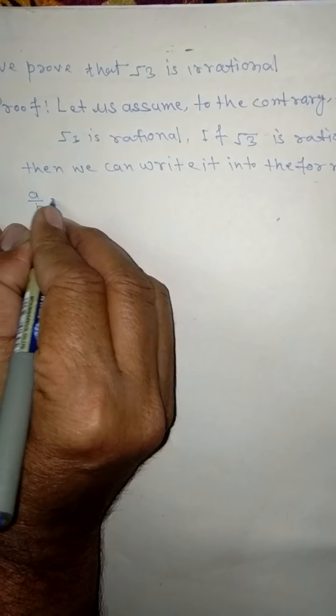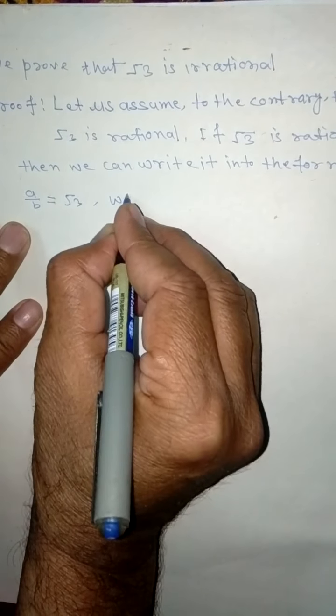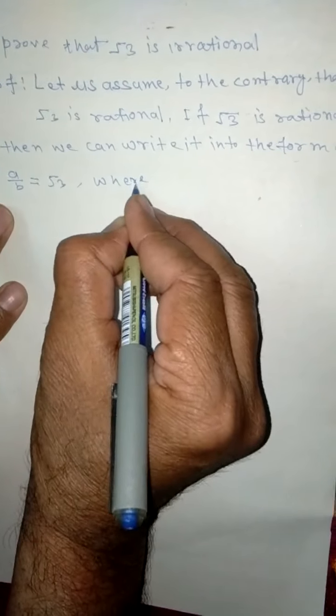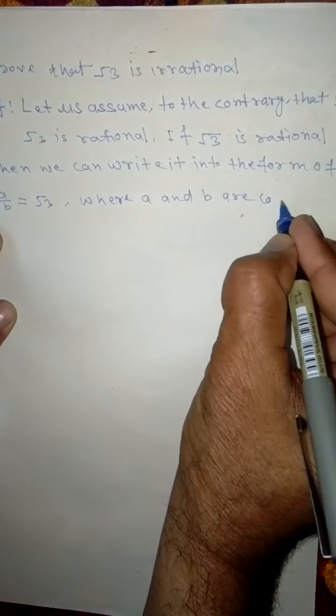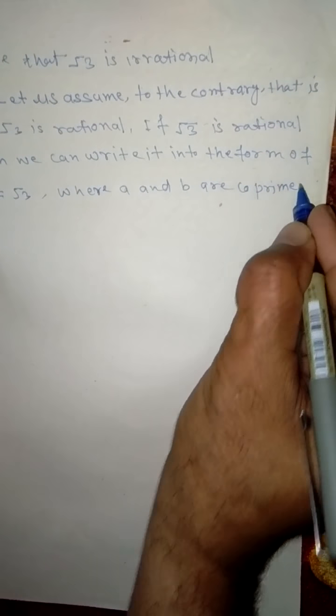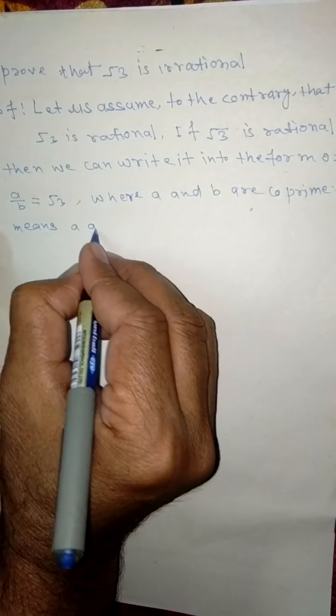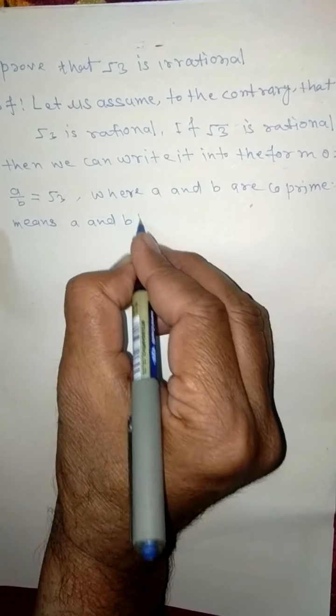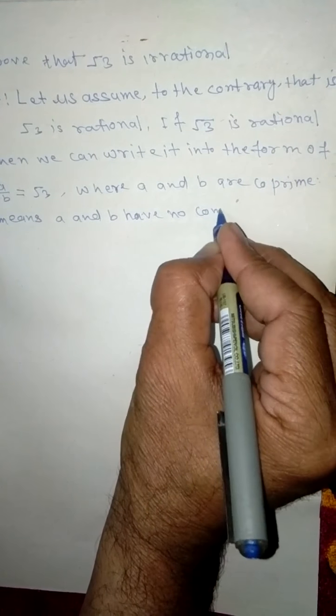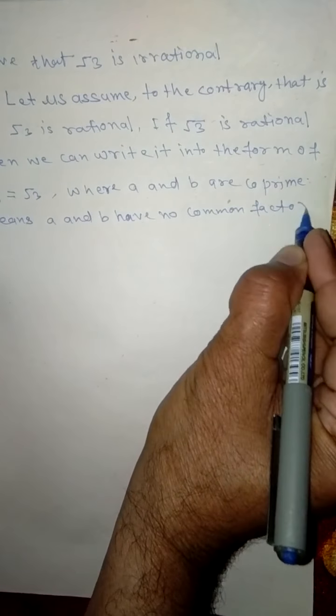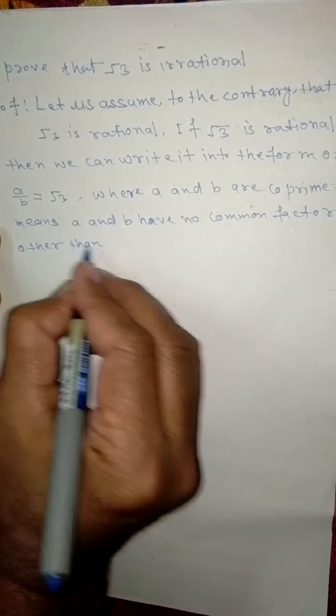Then A by B is equal to root 3, where A and B are coprime, meaning A and B have no common factor other than 1.